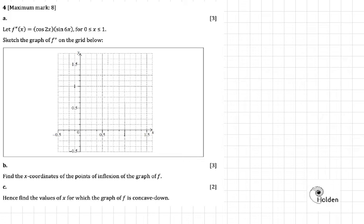Okay, so question 4, maximum mark is 8, and this one is talking about the graph of the second derivative of a function. It gives us the value of the second derivative as cos of 2x multiplied by sine of 6x for the domain x is greater than or equal to 0 but less than or equal to 1. Sketch the graph of the second derivative on the grid below.